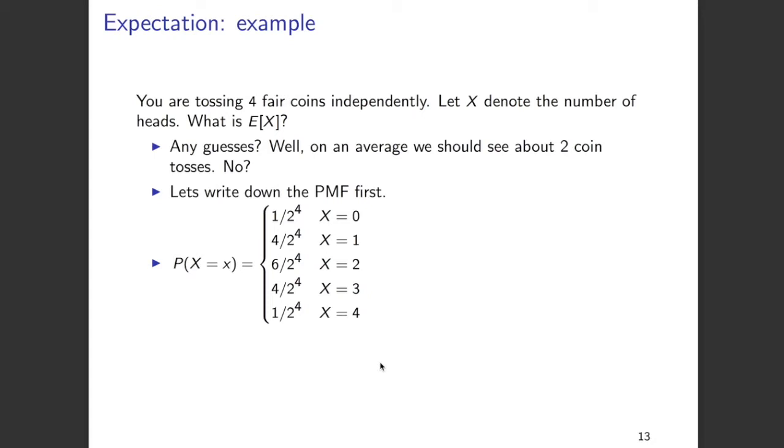Among these 16 options, there's only one option in which X will take a value of 0—that is four tails in succession. Similarly, X will only take the value of 4 if all the coin tosses result in a head, and there's only one such option. Hence, the probability of X taking values of 0 and 4 is 1 over 16. You can similarly find out the other probabilities for X taking value of 1, 2, and 3. The values are given on the slide.